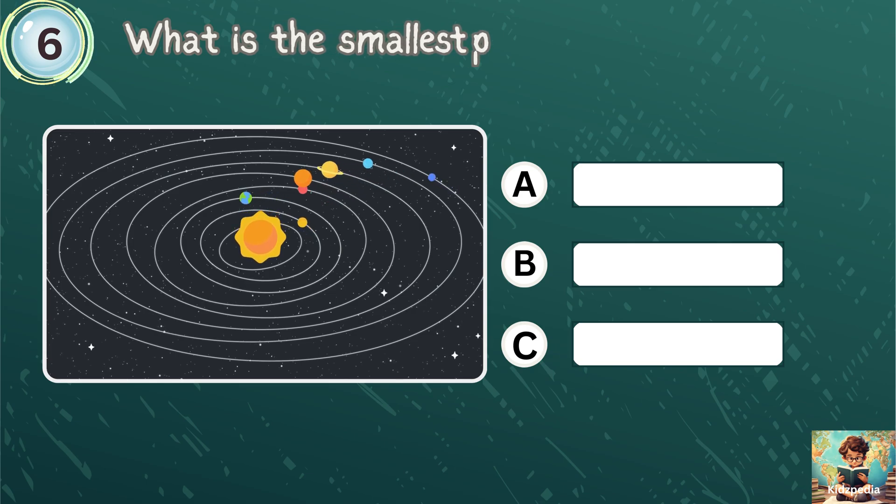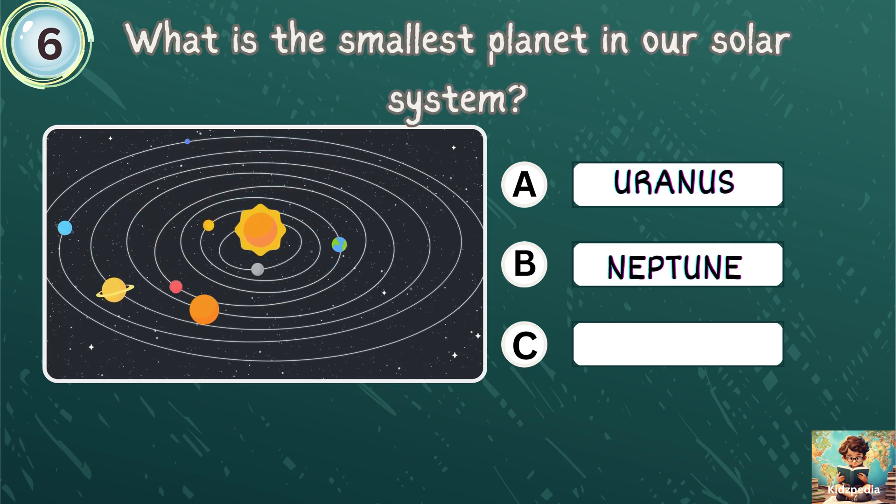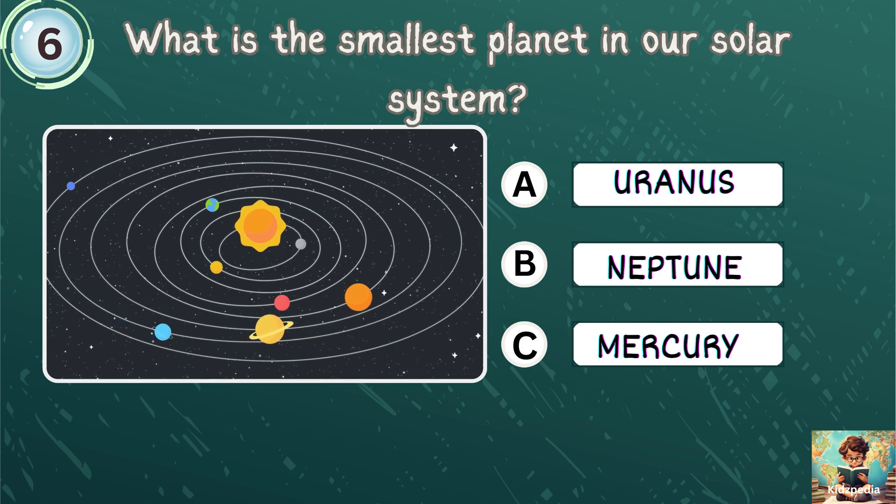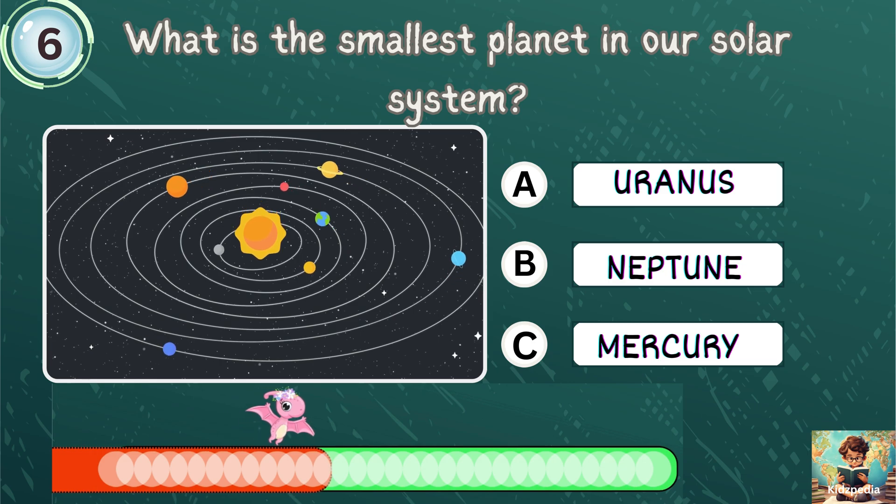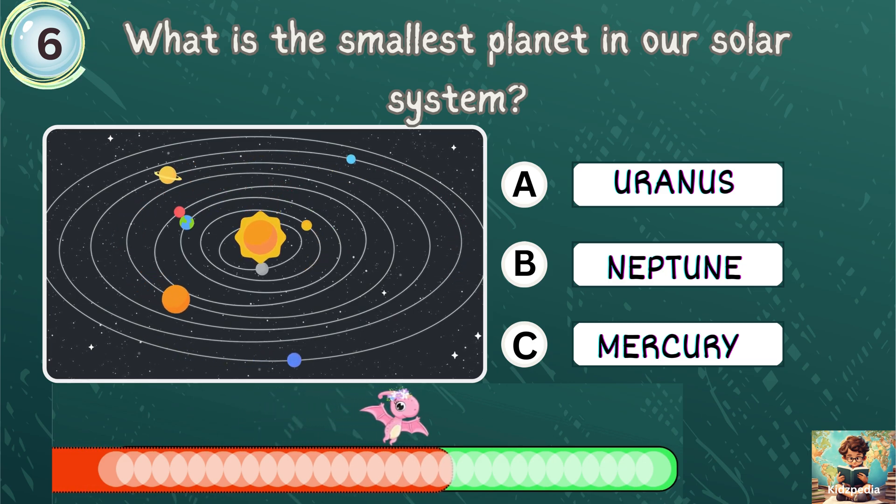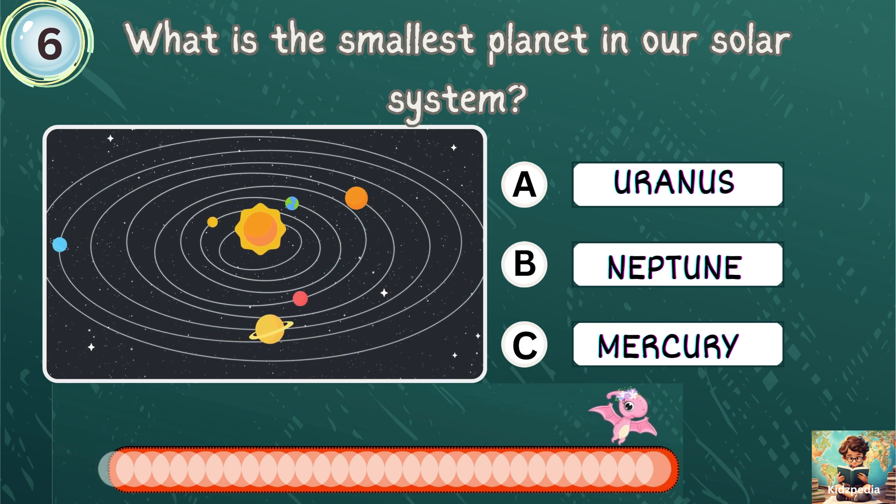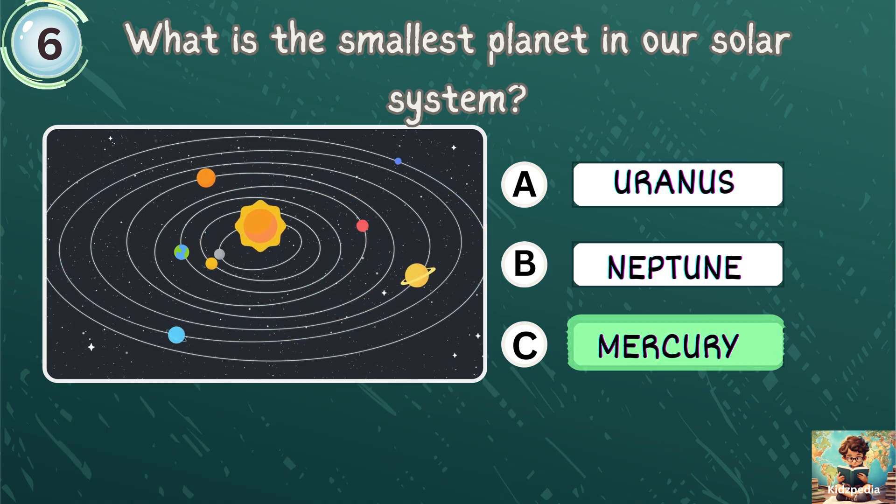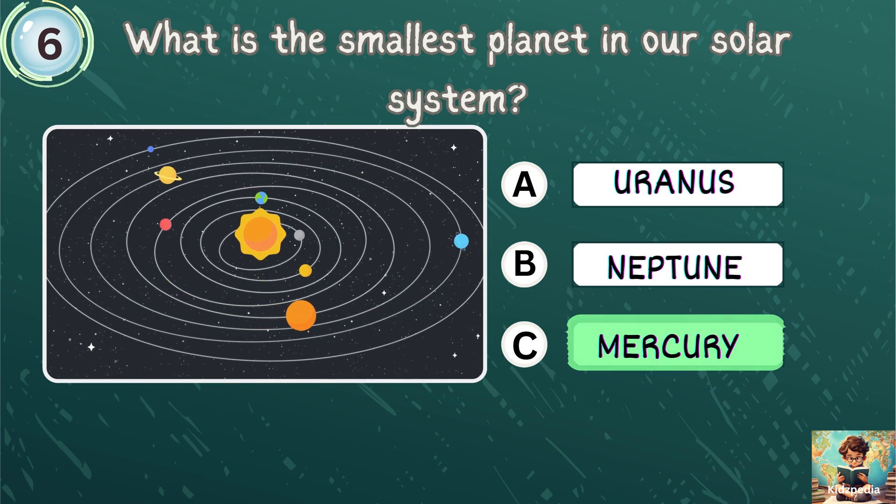What is the smallest planet in our solar system? Uranus, Neptune, Mercury. Mercury is the correct answer. Mercury is the smallest planet in our solar system.